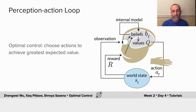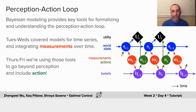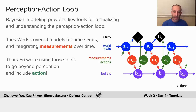Today, we'll talk about the perception-action loop, where an observer gets to make measurements of the world and take actions accordingly in such a way as to maximize their expected value. This involves having an internal model of how the dynamics of the world work and what is valuable for the agent. Bayesian modeling allows us to have key tools that formalize and understand this perception-action loop. The core ingredients are things we've already covered earlier in the week — on Tuesday and Wednesday we covered models for time series and how to integrate measurements over time. Today and tomorrow, we're going to use those tools to go beyond perception and include action.